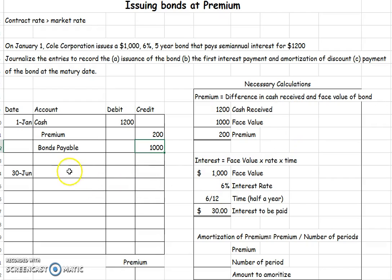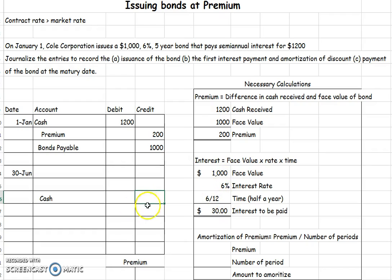Now let's look at the second journal entry where we pay our interest payment to our bondholders and amortize our premium. When paying our bondholders, I'm always going to pay them face value times contract interest rate times time. So in this situation, face value times 6% times half a year means I need to pay them $30. This number won't change.